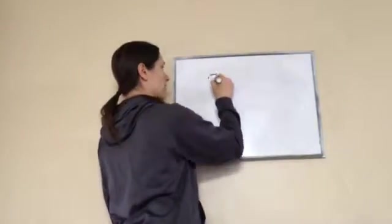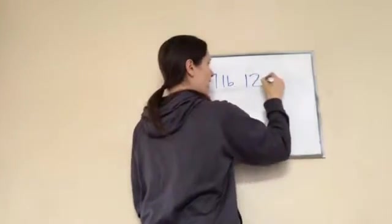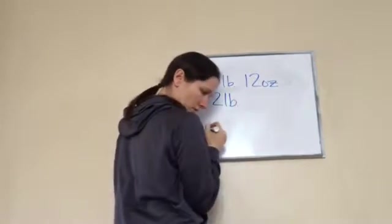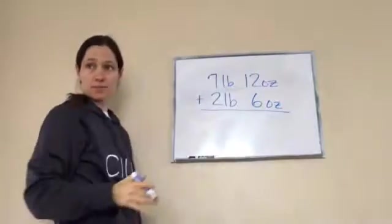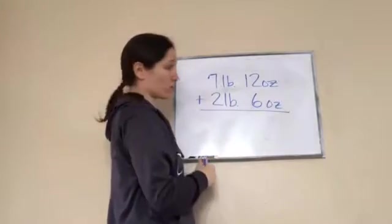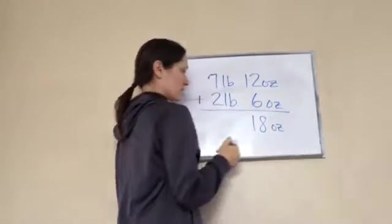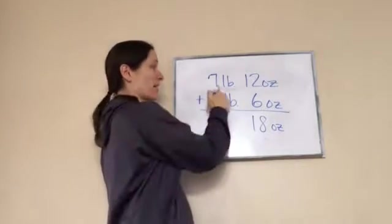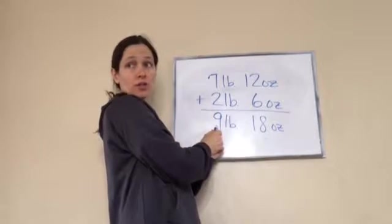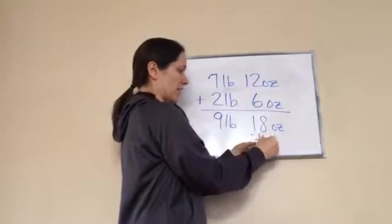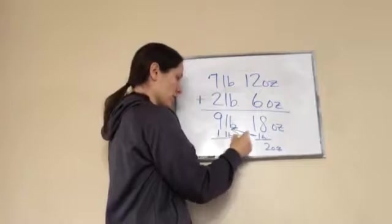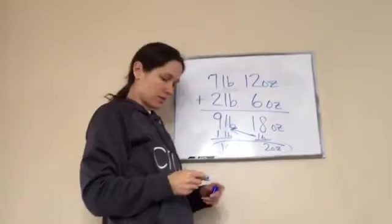Next problem — this time we're adding. 7 pounds 12 ounces plus 2 pounds 6 ounces. Add the ounces and pounds separately: 12 plus 6 is 18 ounces. Since 16 ounces equals one pound, take 16 away from 18 — that leaves 2 ounces — and carry that pound over. Then 7 plus 2 is 9 pounds, plus the carried pound is 10 pounds. The answer is 10 pounds and 2 ounces.